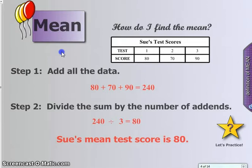We're now going to take the sum, 240, and we're going to divide by 3. And we get 80. Sue's mean test score is 80. Another word for mean is average. So her average of all three tests were 80.